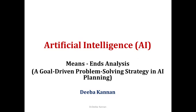We are going to find the difference between the present state and goal state each and every time. We are going to choose an action that will make us move closer to the goal state. So each time, instead of finding all possible actions, we compare with the goal each and every time. That's why we call it a goal-driven problem solving strategy in AI planning.